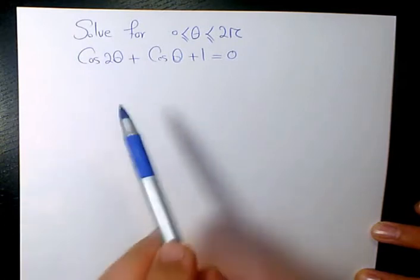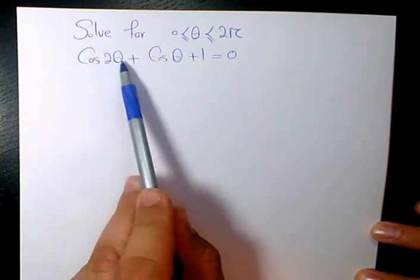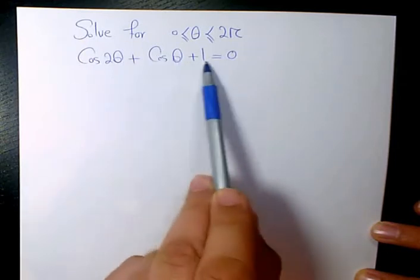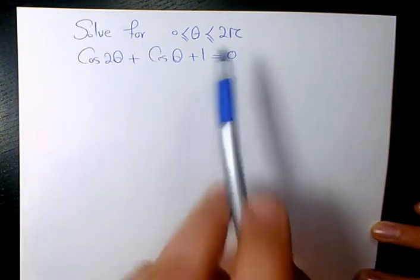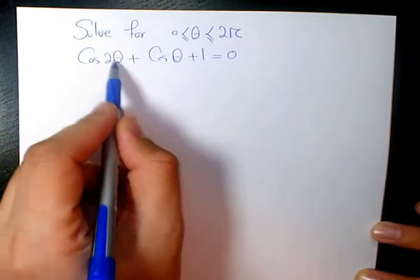In this video I want to solve this trigonometric equation, which is cos(2θ) + cos(θ) + 1 = 0. And we need to solve it for θ between 0 and 2π. The first thing I want to do,